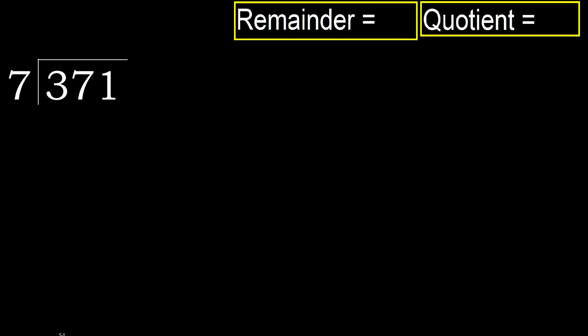371 divided by 7. 3 is less, therefore next. 37 is not less, therefore with 37.